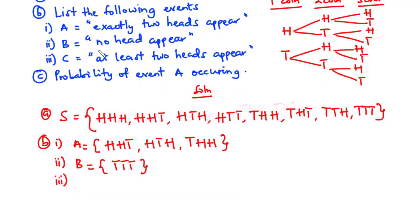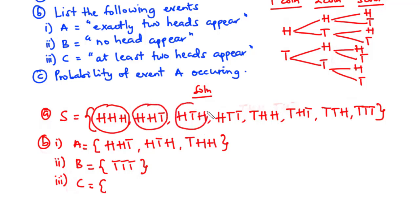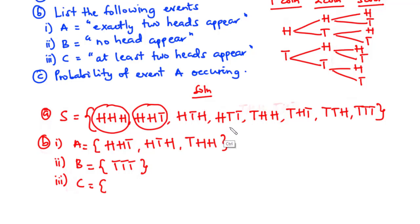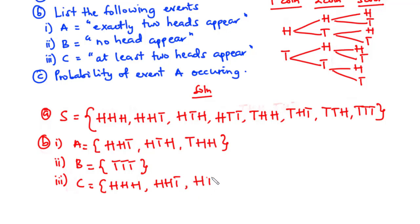For part B(iii), set C — at least two heads appear. This means two heads or more. HHH has three heads, HHT has two heads, HTH has two heads, and THH has two heads. THT has only one head, so it is not included. So set C = {HHH, HHT, HTH, THH} — four different elements.